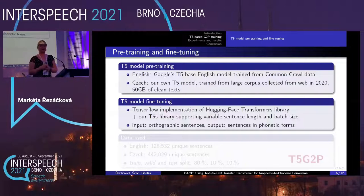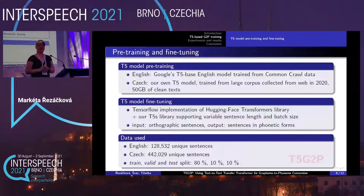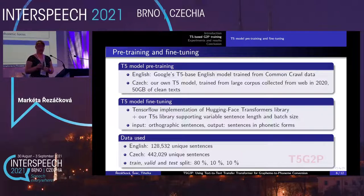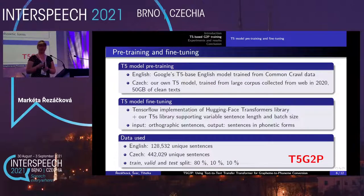At the input we had orthographic sentences, and we trained the model to predict the sentences in their phonetic forms. We have quite a lot of proprietary data. For English, we had about 130,000 unique sentences with phonetic transcriptions. For Czech, we have 440,000 unique sentences with phonetic transcriptions. For both languages, we split data into train, validation, and test sets. We called our final trained model T5-G2P.